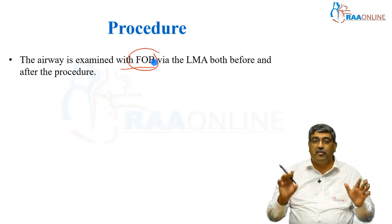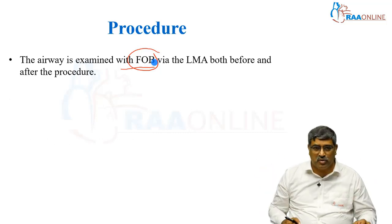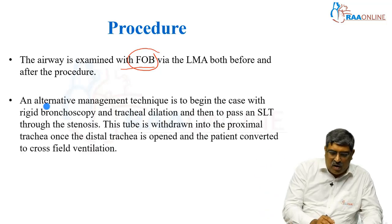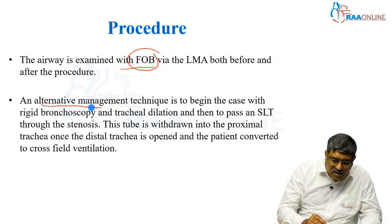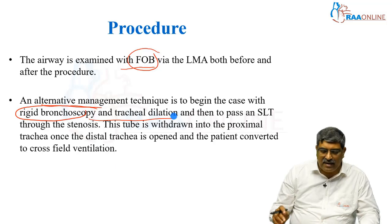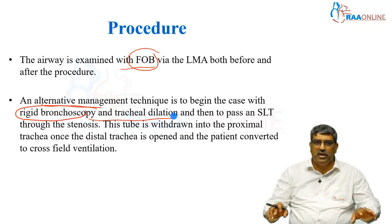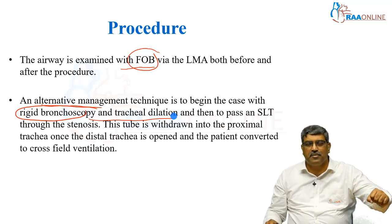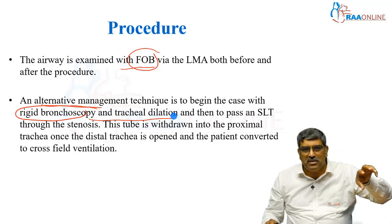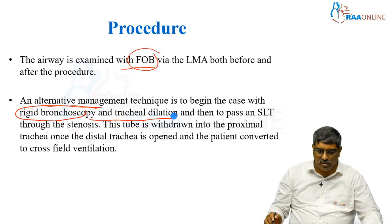It is very important to view the airway before and after the procedure. An alternative management is to begin the case with rigid bronchoscopy and tracheal dilatation, then pass a single lumen tube through the stenosis. You do rigid bronchoscopy, relieve the obstruction, and pass the single lumen tube across the stenosis.